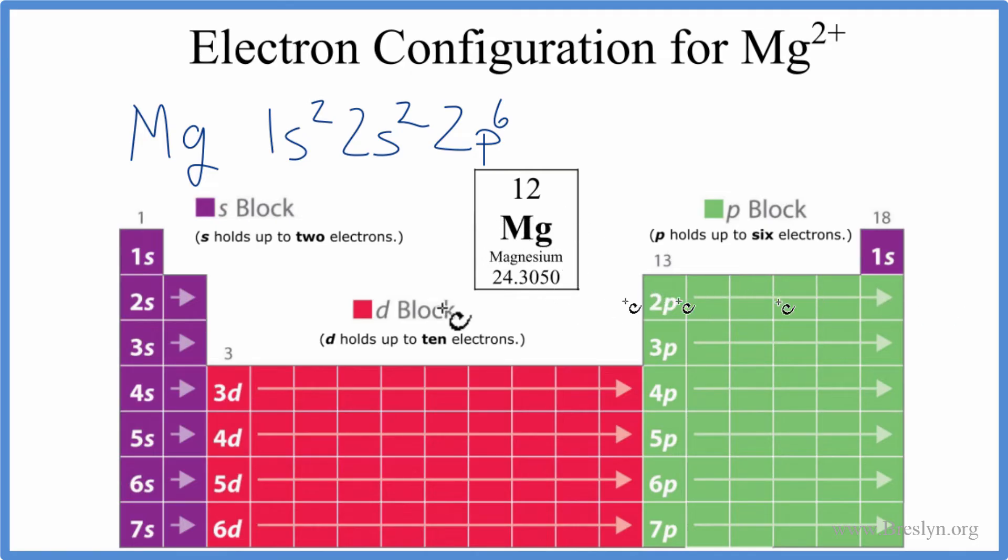So we went from 2p to 3s. And we said 3s can hold up to 2. So we'll put 2 in there. And we've used all 12. So this is the electron configuration for magnesium. We wanted to do Mg2+. So when you have an ion like Mg2+,